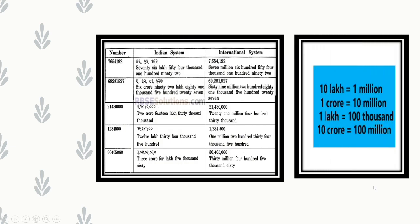Let us see examples of both systems with the number 7,654,192. In the Indian system, starting from the right, we put a comma after 3 digits and then after every 2 digits: 76,54,192. In the international system, starting from the right, we put a comma after every 3 digits: 7,654,192.